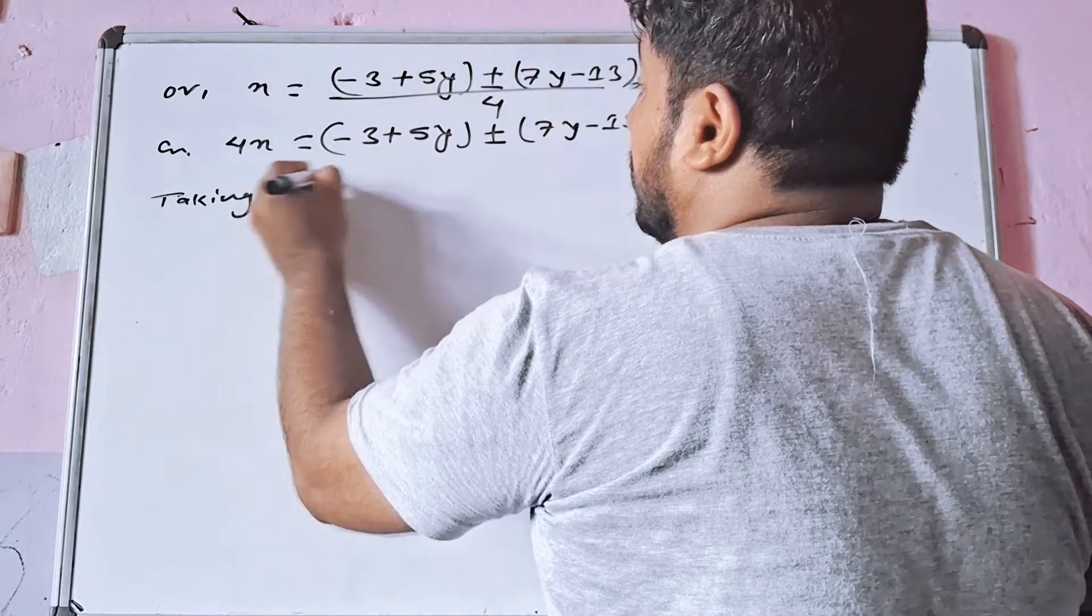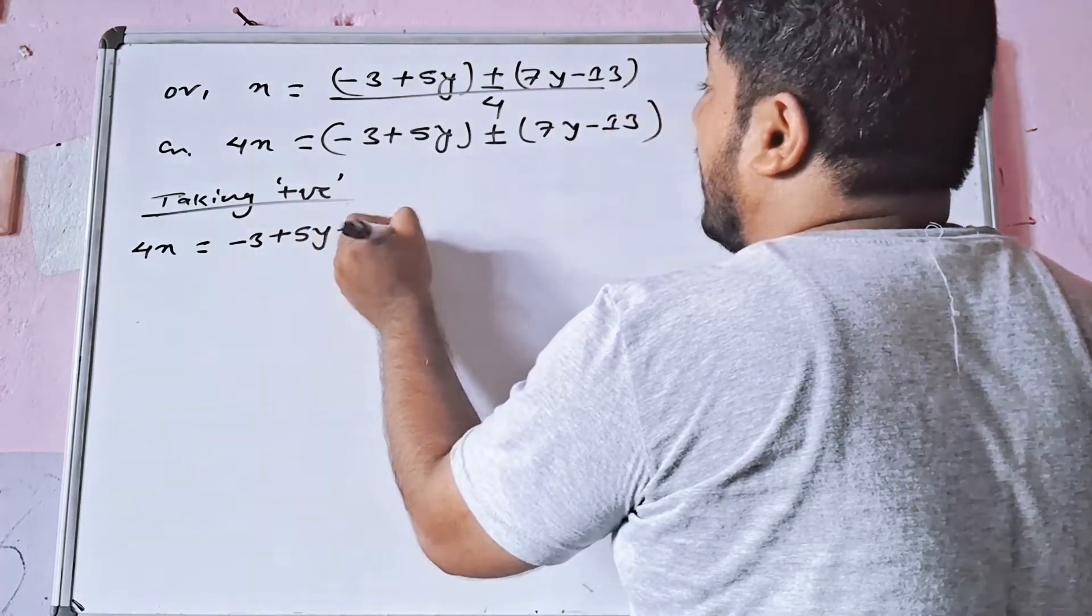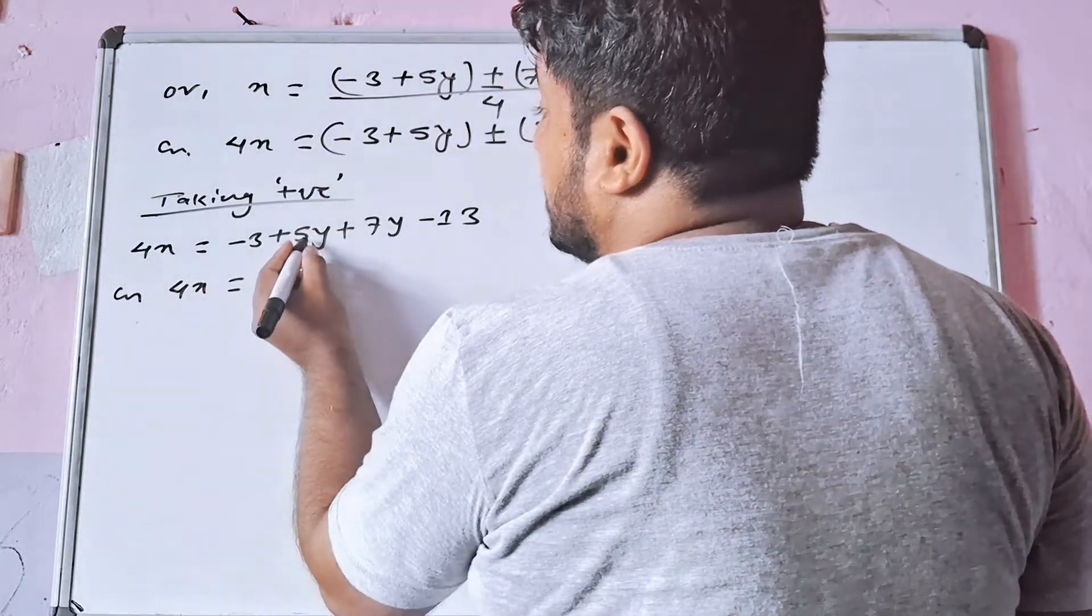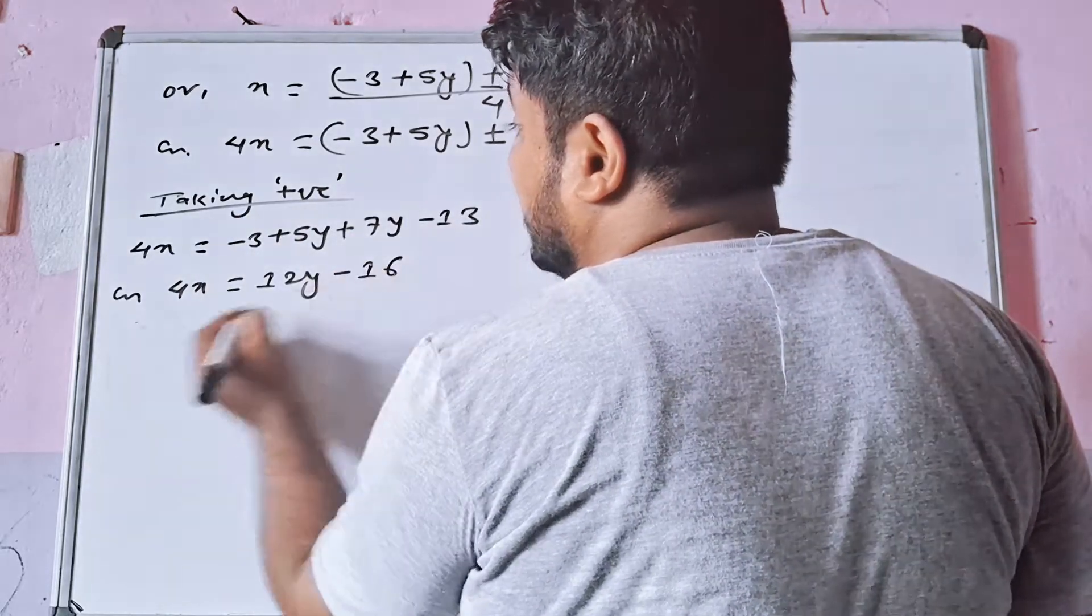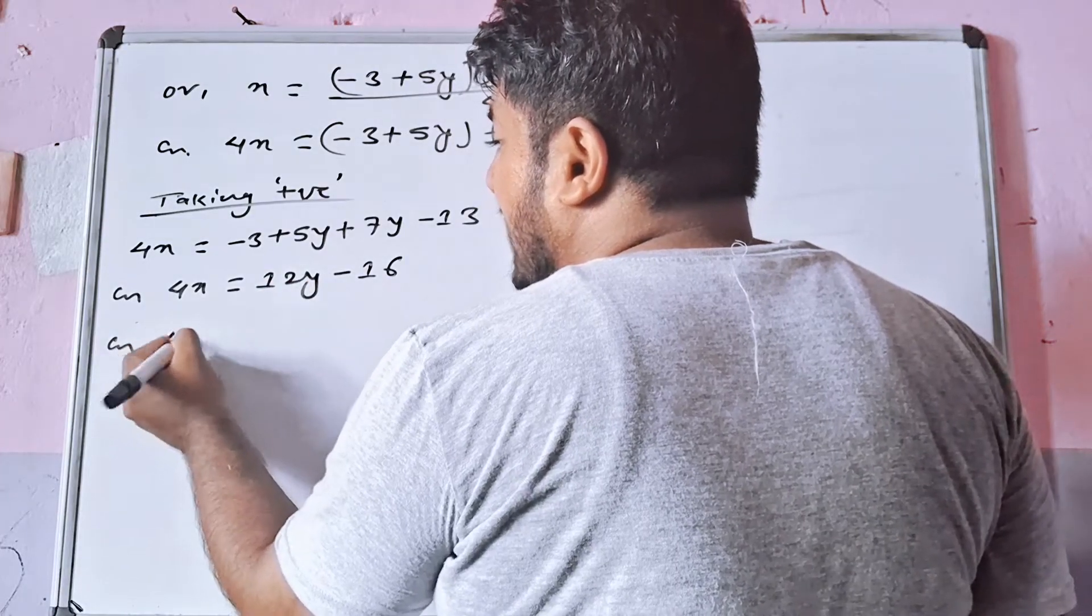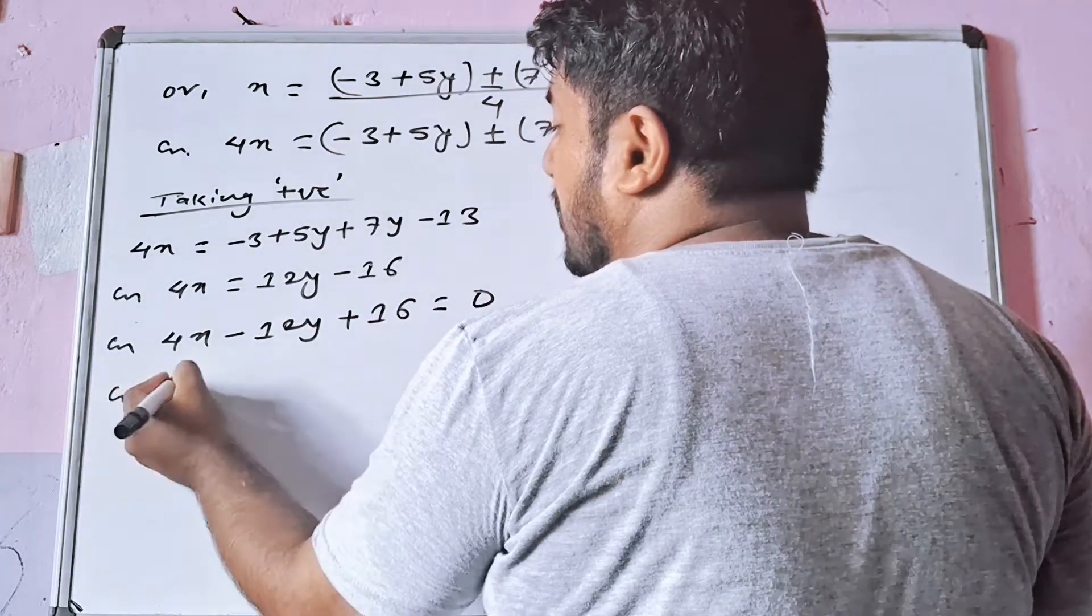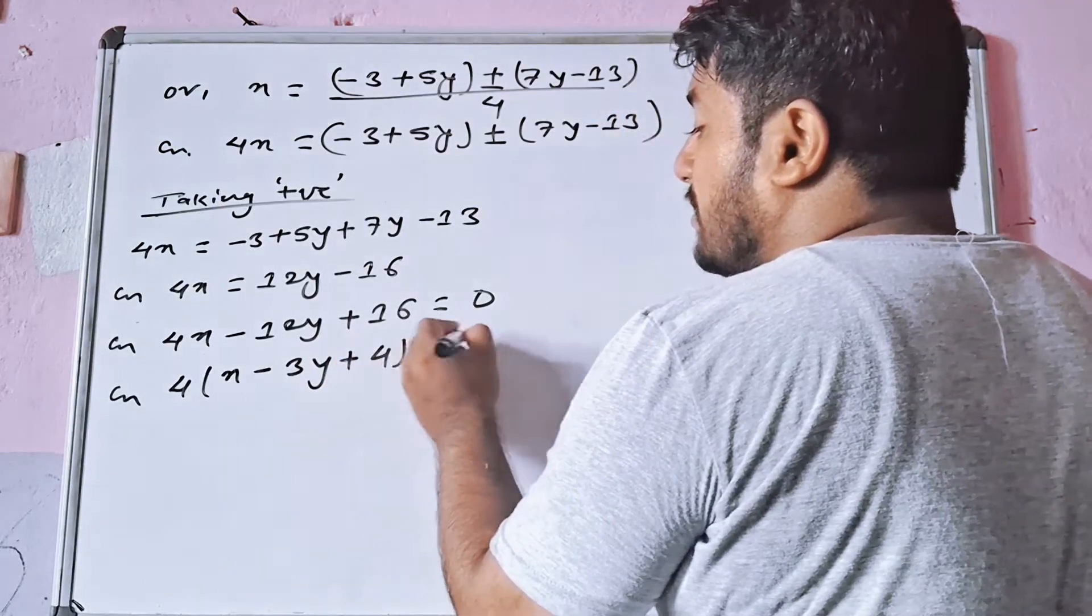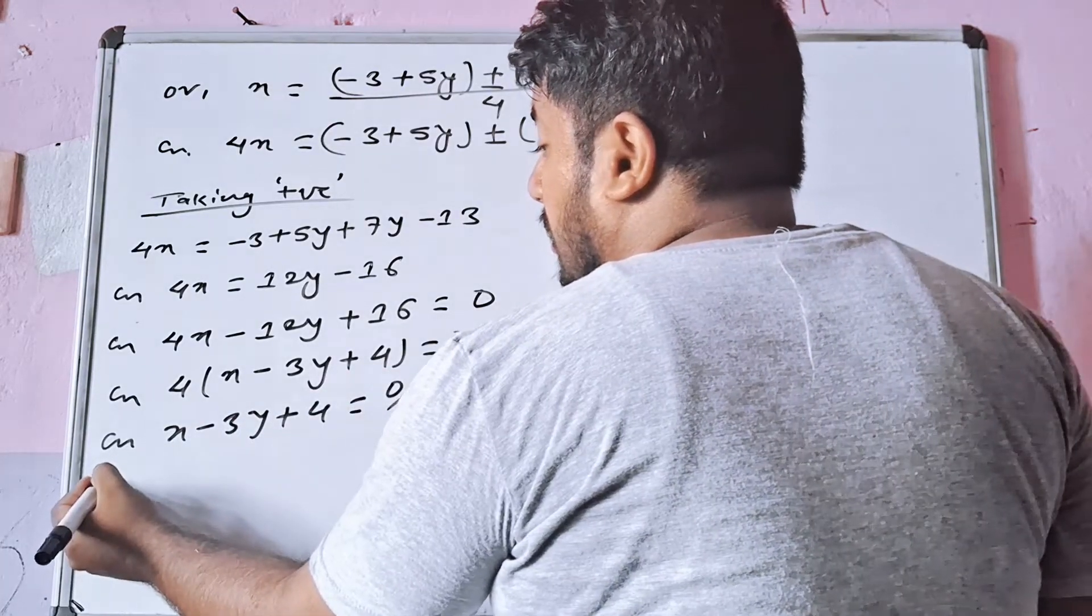Taking positive: 4x is equal to minus 3 plus 5y plus 7y minus 13, which gives 4x equal to 12y minus 16. So 4 common: x minus 3y plus 4 is equal to 0.